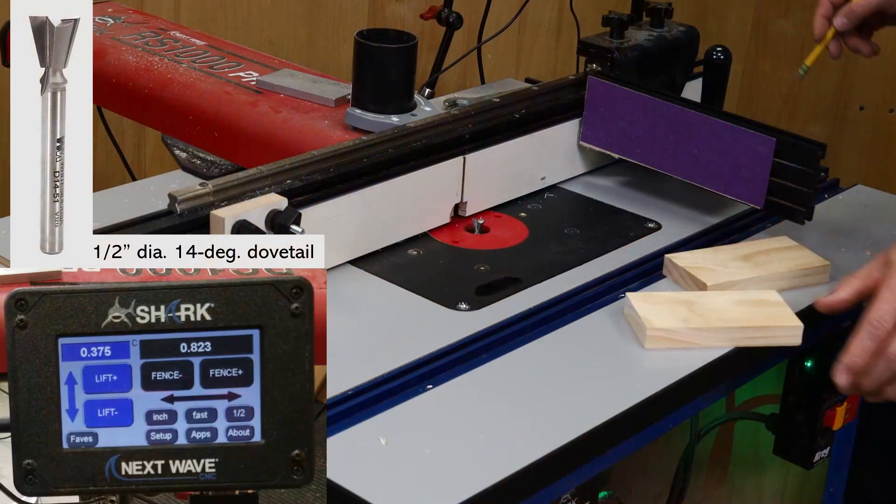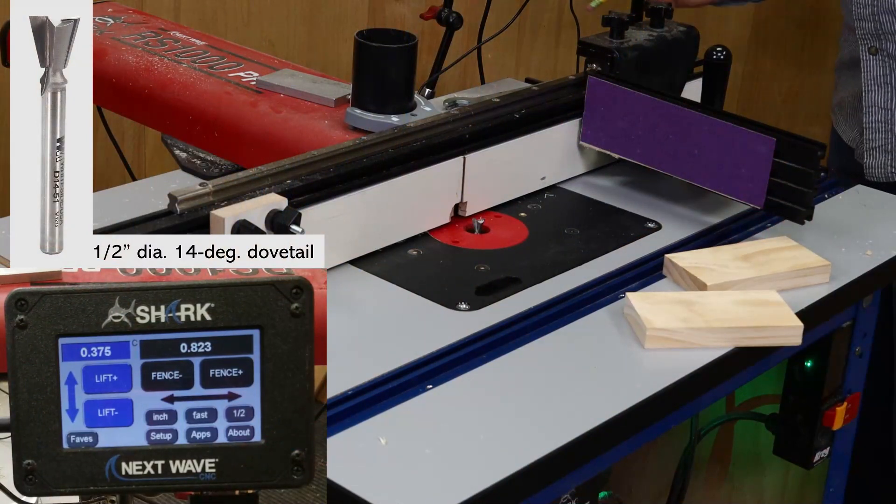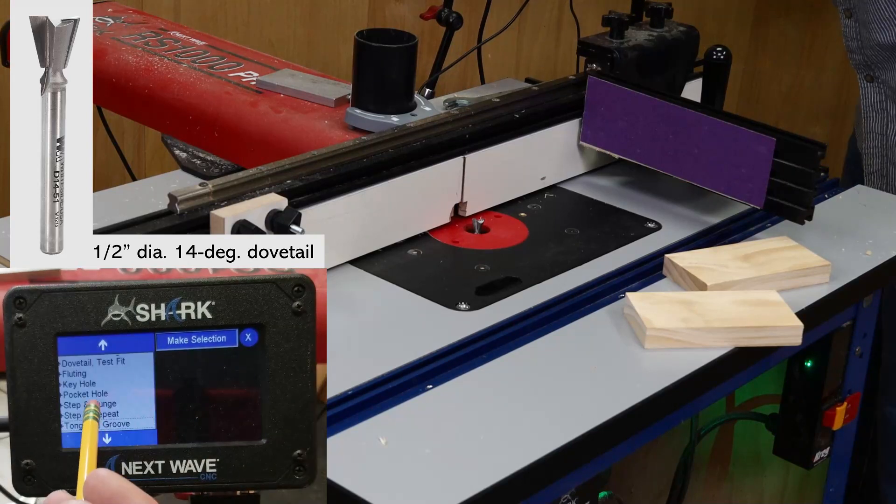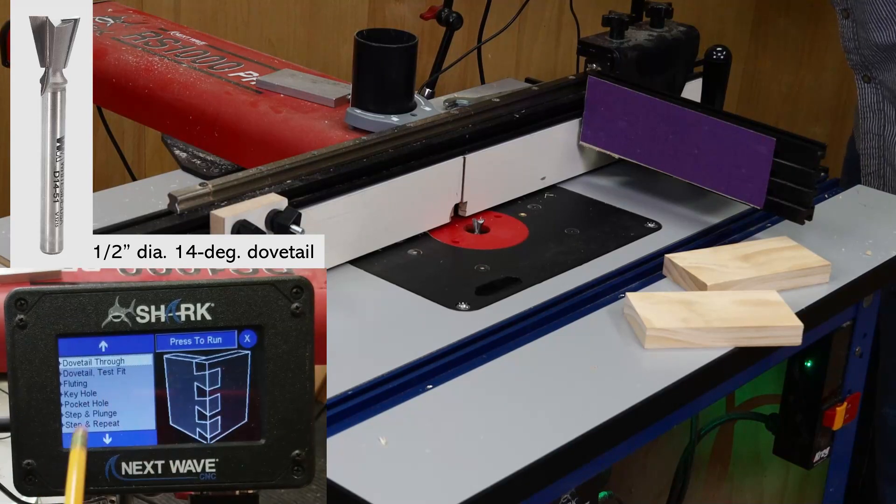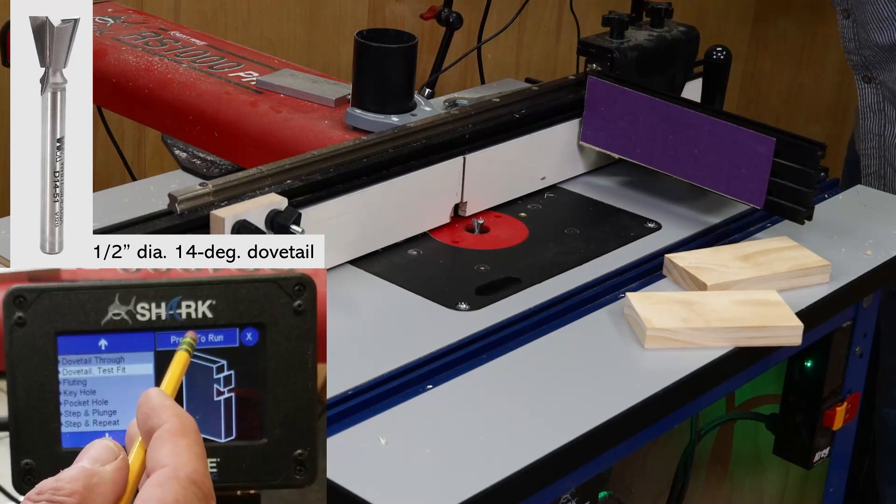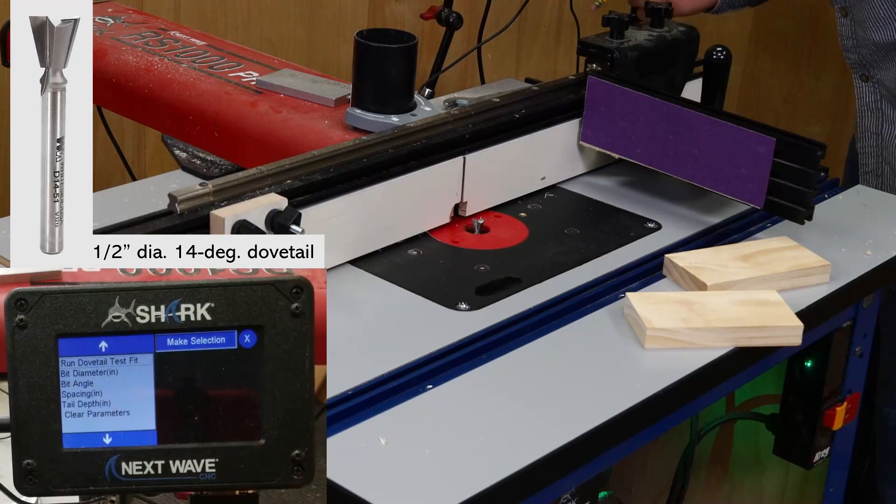I've already installed the bit and calibrated both the bit and the fence, so I can go straight to the Dovetail Test app at this time. When you open the Dovetail Test app, you'll see it has a list of parameters that need to be set up, just like the other apps.